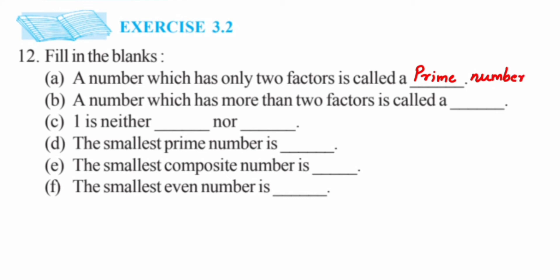Moving ahead, question (b): a number which has more than two factors is called... This is the complete opposite definition of the first question. The opposite of prime number is composite number. Composite numbers have more than two factors, so let's write that down.